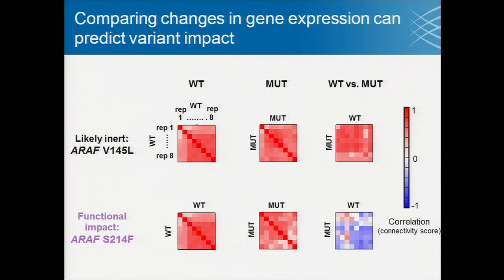In contrast, another mutation in ARAF, S214F, shows that the mutant ORF also gives a very strong, consistent gene expression signature. However, when comparing the mutant and wild type gene expression changes, they're very different. So in this case, we would predict that this mutation has a functional impact.